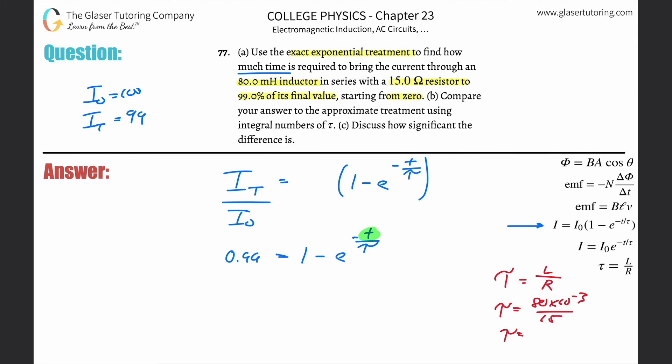Just simply take that 80 times 10 to the minus 3 and divide it by 15, and this will work out to be 5.3 repeating times 10 to the minus 3. That's the tau, so I'm going to erase it and plug it in now. This is going to be 5.3 times 10 to the minus 3.